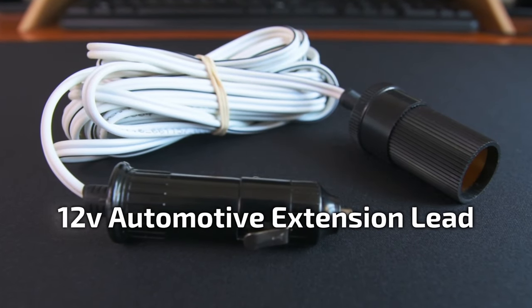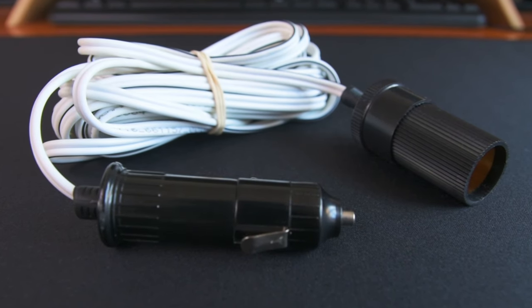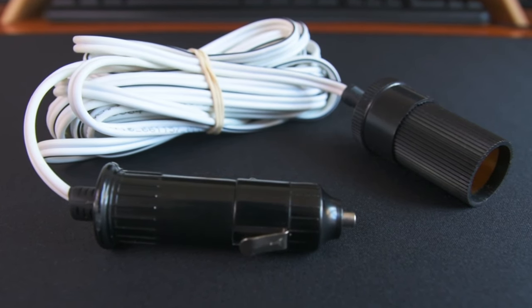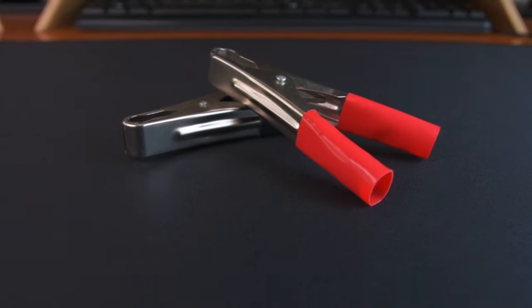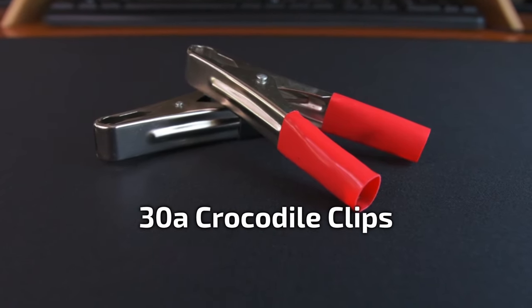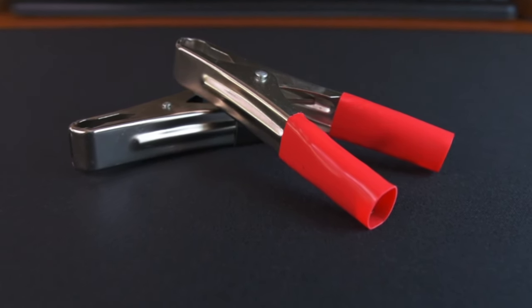First up is the power lead. I used a 5 meter automotive extension lead with a plug at one end and a socket at the other. It's rated to 12 volt and has a 5 amp fuse concealed inside the plug. If you want to run your bike wash directly from a 12 volt battery and not just your car's electrical outlet you'll need some crocodile clips to make an adapter.